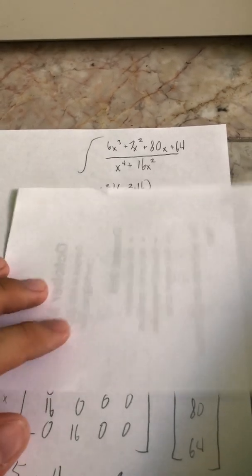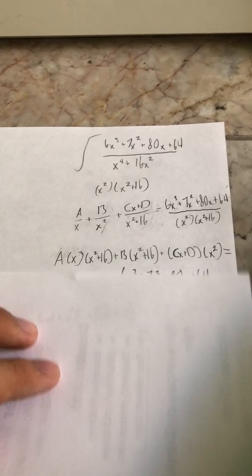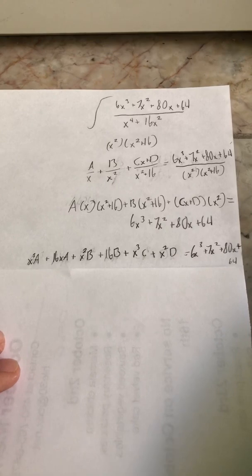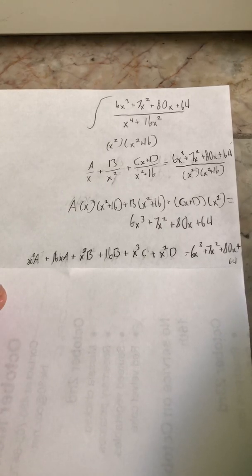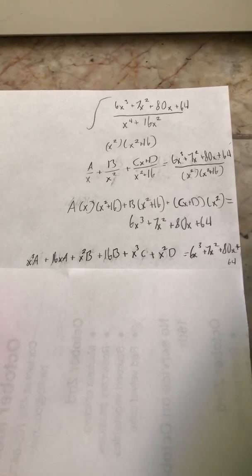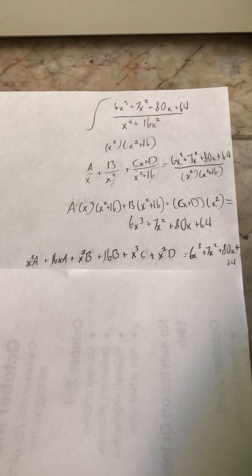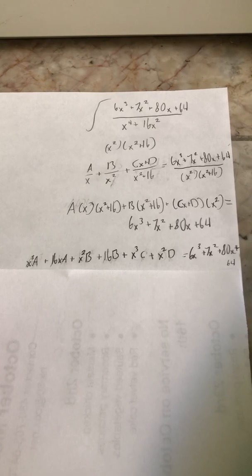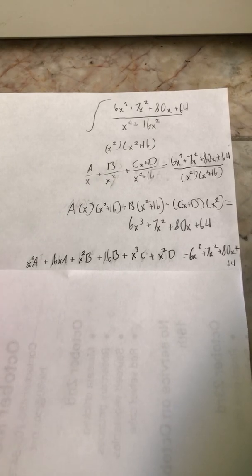Now we're going to go into our second example. I found the factors of the denominator to be x squared and x squared plus 16. I turned it into our fractions, multiplied everything by the denominator, and this is what we get: x cubed times A plus 16x times A plus x squared times B plus 16B plus x cubed times C plus x squared times D equals our numerator.